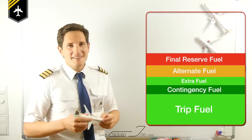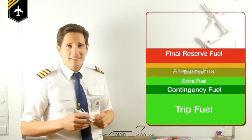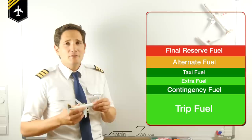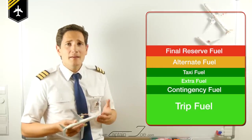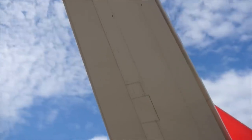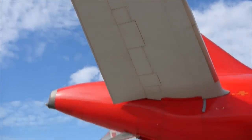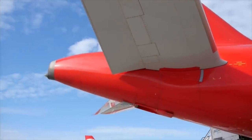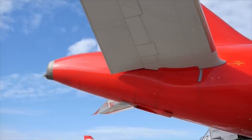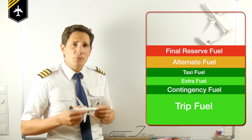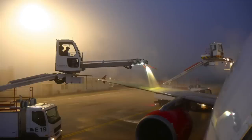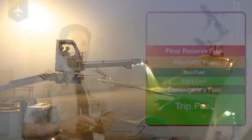Last but not least, you need taxi fuel. That's the fuel getting you from the gate position to the runway, and it also covers fueling the auxiliary power unit for air conditioning and engine start. You can add a little extra taxi fuel if needed — especially during winter operations in case your airplane needs to be de-iced, which will extend your taxi time and fuel burn by a good 15 minutes.